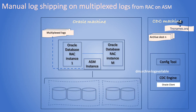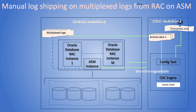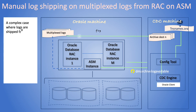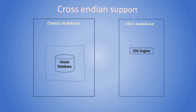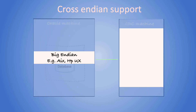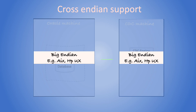Here is an example of a very intricate and sophisticated deployment. The CDC for Oracle engine is agnostic to the endianness of the source database with respect to the machine CDC is installed on. Different combinations of big-endian and little-endian will work just the same.